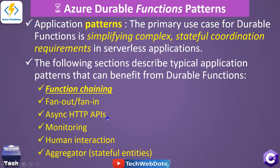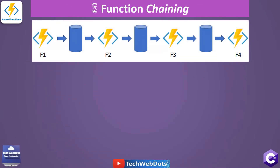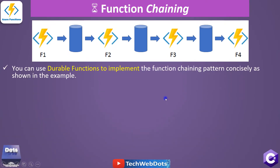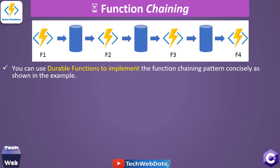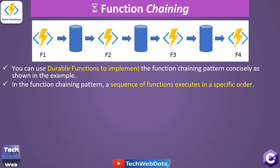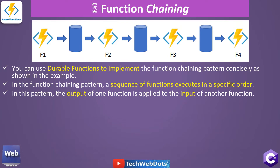What is function chaining? As you can see in the figure, it is straightforward - there is a function one which processes something and produces output, then we move to the next function which processes something, and so on through function four. In the function chaining pattern, the sequence of functions executes in a specific order - one function executes, then the second, then the third. They do not all execute at the same time.